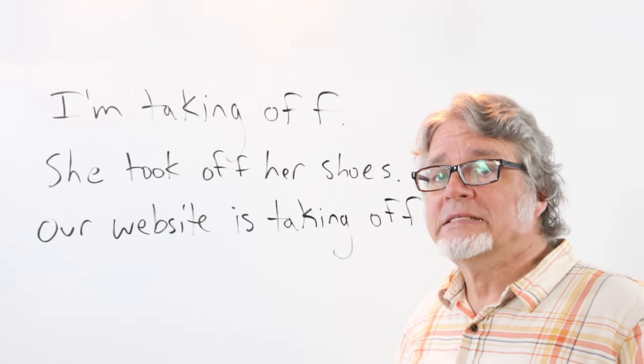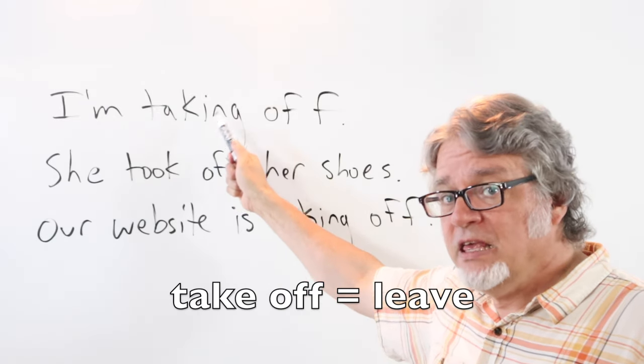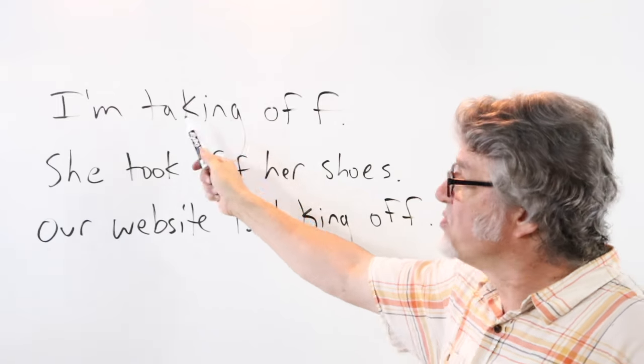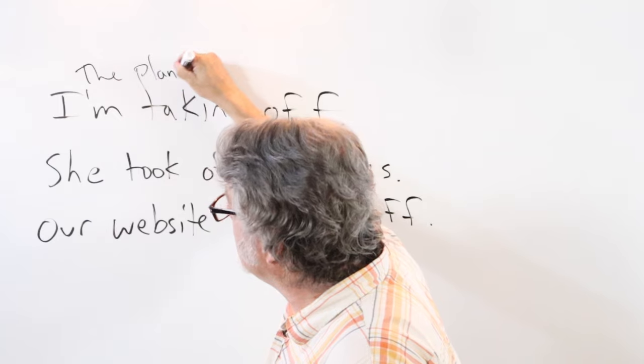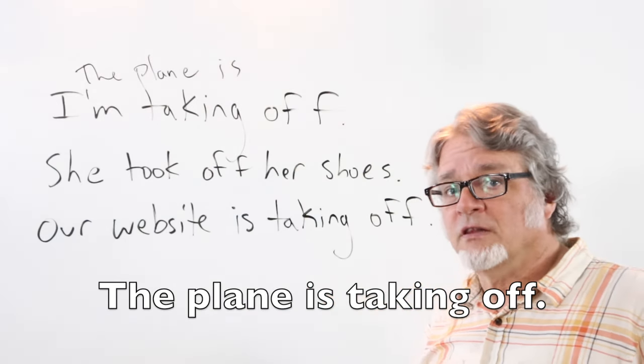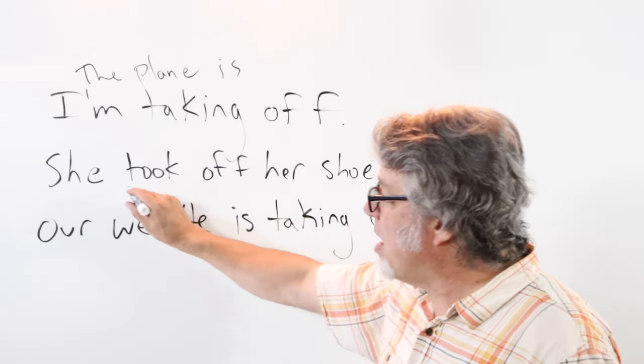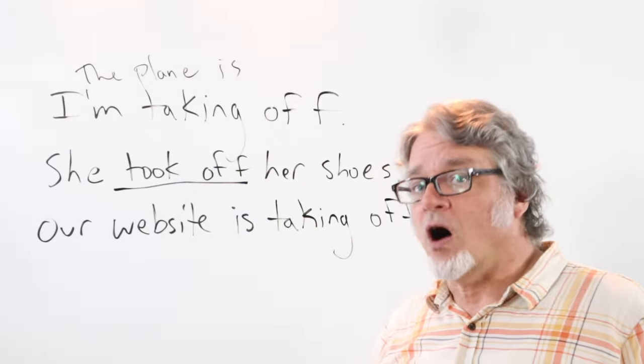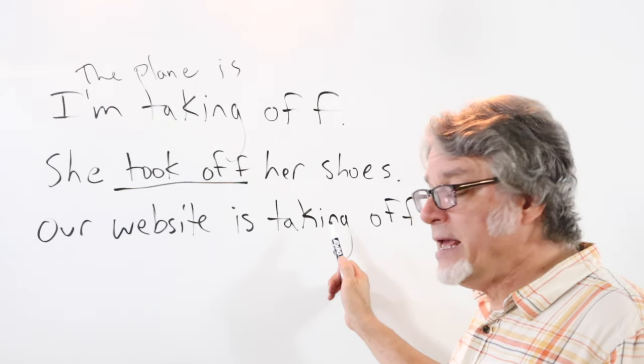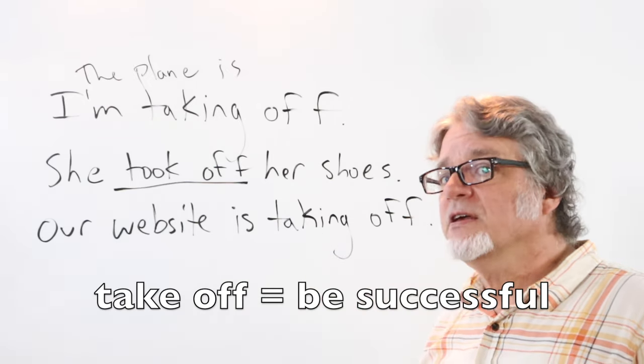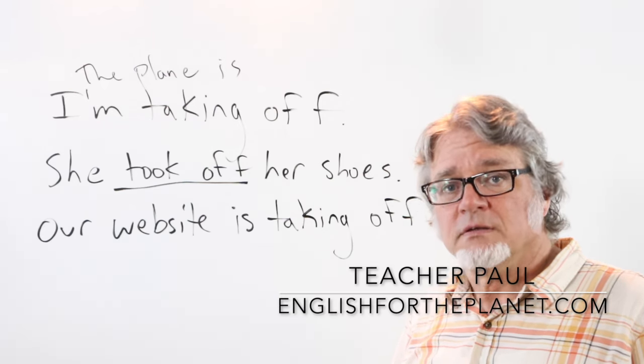For the phrasal verb take off there are many meanings. I'm taking off. This means that I'm leaving. I'm going somewhere. We also use take off for a plane. The plane is taking off. It's leaving the ground. She took off her shoes. The phrasal verb take off in the past tense is often used for removing items of clothing. Our website is taking off. When something takes off it becomes successful. That's a good thing.